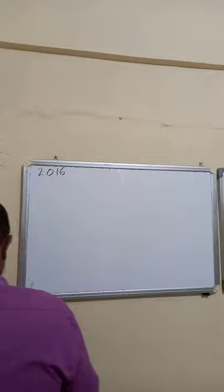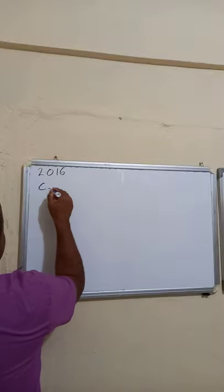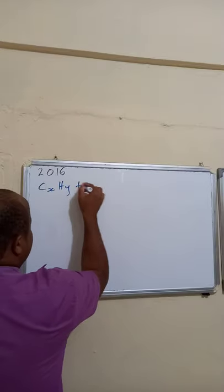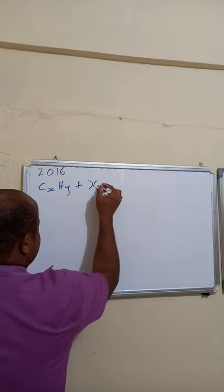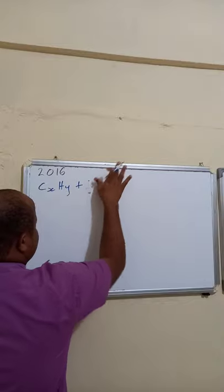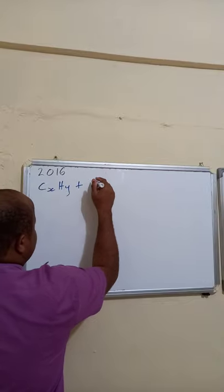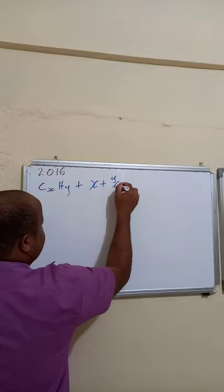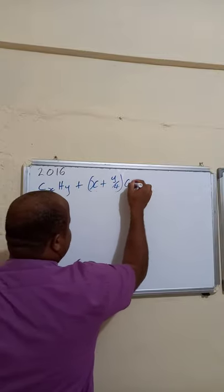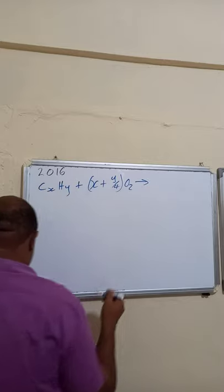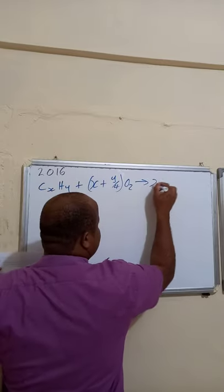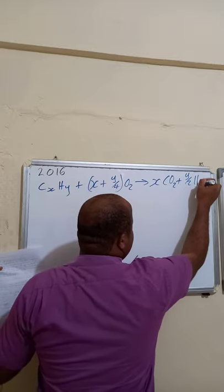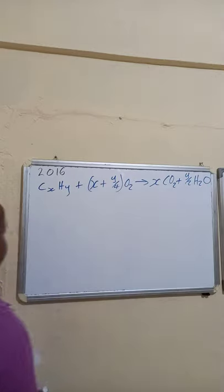The general combustion equation is: CₓHᵧ + (X + Y/4)O₂ → XCO₂ + Y/2 H₂O.